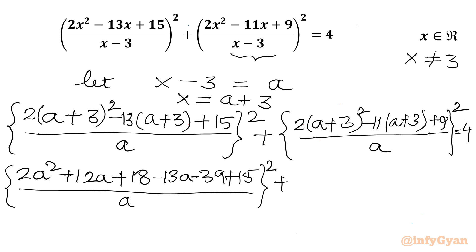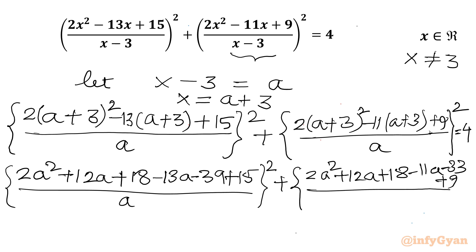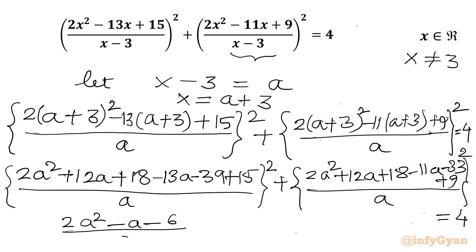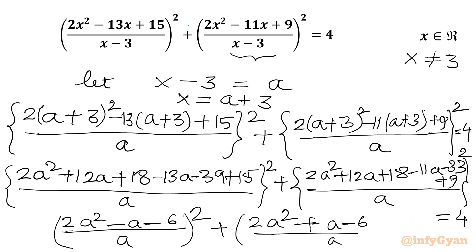The RHS is 4. In the second bracket, same way: 2a² + 12a + 18 - 11a - 33 + 9 divided by a², and RHS is 4. Once I simplify the numerator, I will write only 2a² - a - 6 in the first numerator over a², and the second bracket becomes 2a² + a - 6 over a².